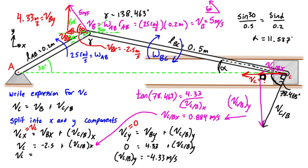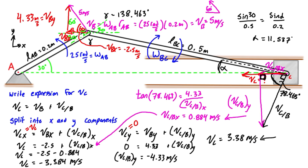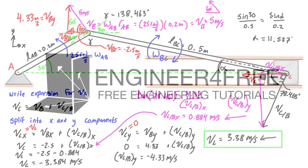Plugging in, VC equals negative 2.5 minus 0.884, giving VC equal to negative 3.384 m/s — so VC equals 3.38 m/s to the left. This is exactly the result from the last video using vector relative motion analysis. I just wanted to show you can use scalar analysis if you prefer not to do the vector cross product, though there are a few slight differences along the way. Join me in the next video where we'll solve this same crankshaft problem using the method of instantaneous center of zero velocity.